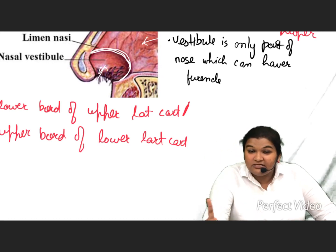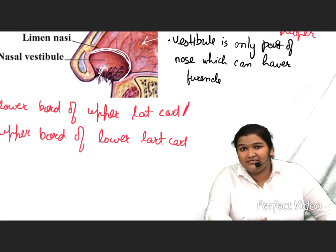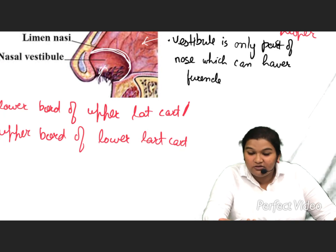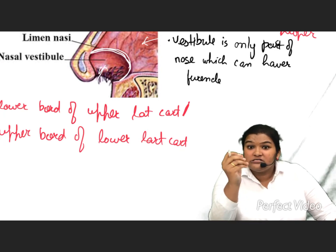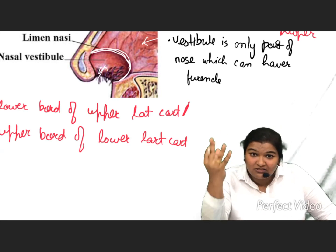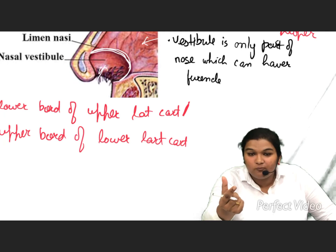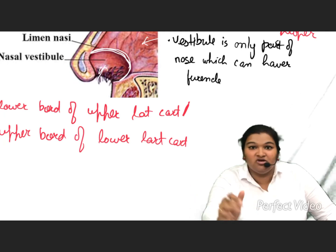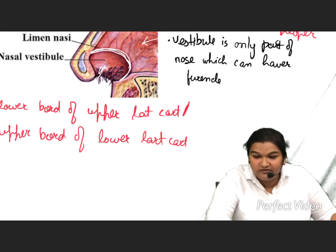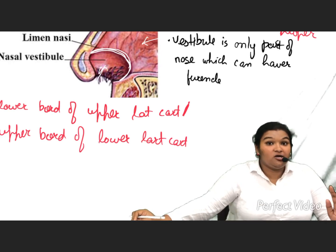However, we cannot say furuncle in the external auditory canal equals ear vestibulitis — that would be wrong. If a patient is mistakenly labeled as having ear vestibulitis, it is an emergency condition; that patient will have severe sensorineural hearing loss. So nasal vestibulitis and a furuncle in the ear are both different conditions.